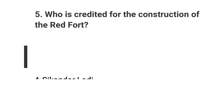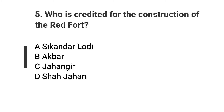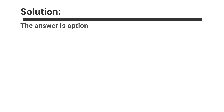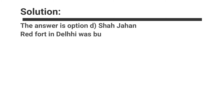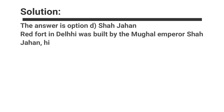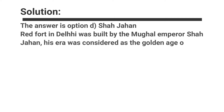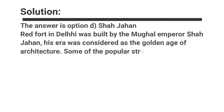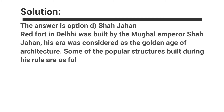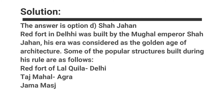Question number five: Who is responsible for the construction of the Red Fort in Delhi? Options are A. Sikandar Lodi, B. Akbar, C. Jahangir, D. Shah Jahan. The answer is option D, Shah Jahan. The Red Fort in Delhi was built by Mughal Emperor Shah Jahan. His era was considered the golden age of Mughal architecture. Some of the popular structures built during his rule include the Red Fort (Lal Qila) in Delhi, Taj Mahal in Agra, and Jama Masjid in Delhi and Agra.